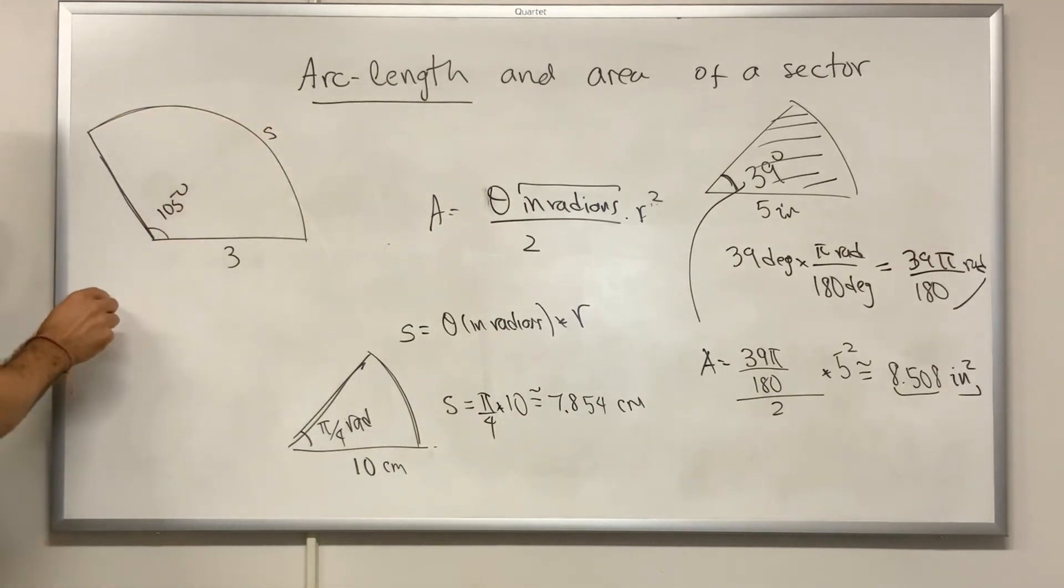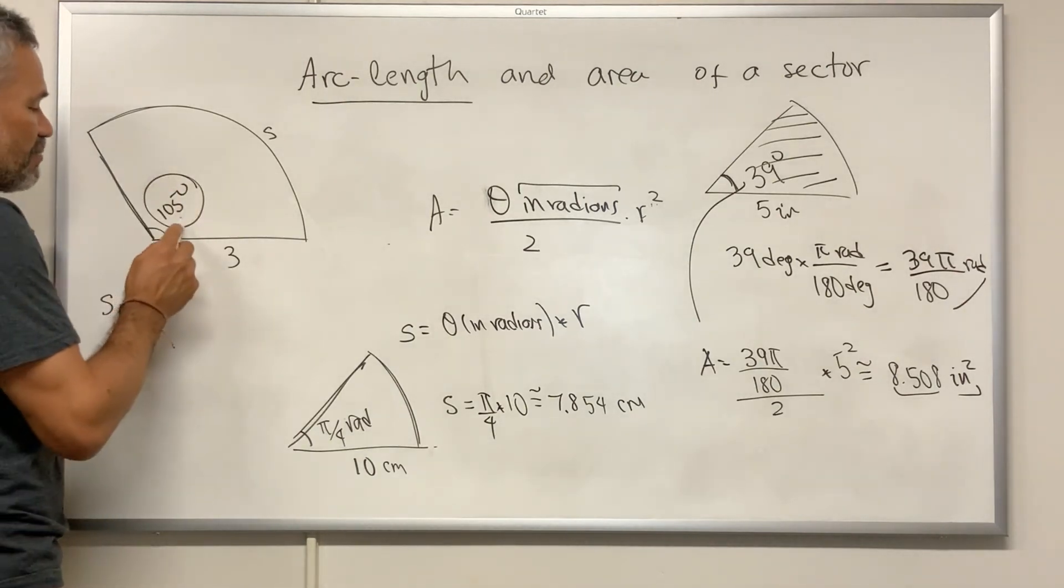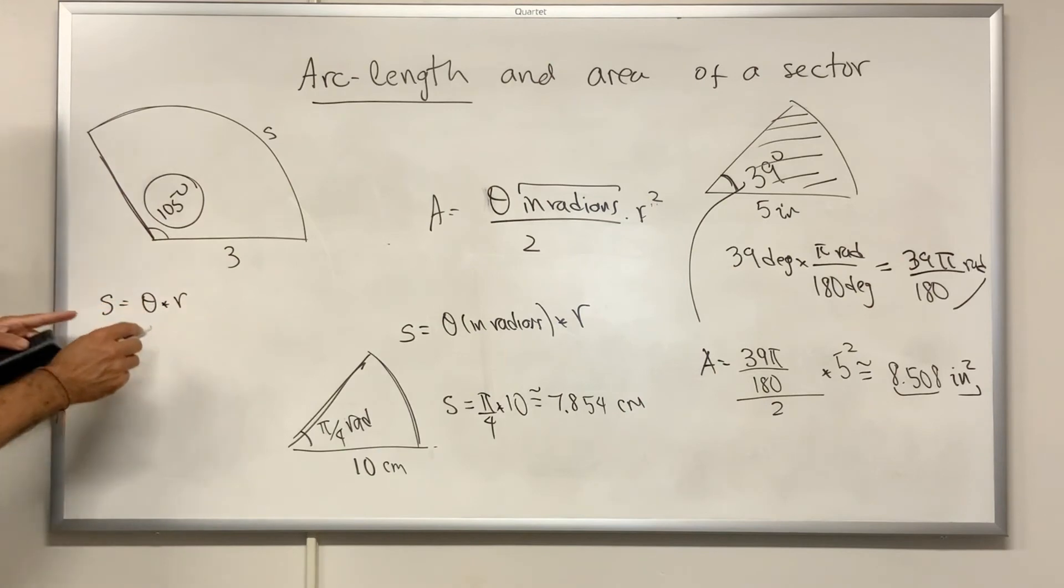then the formula is the angle times the radius. But in this case, notice that the angle is in degrees. Degrees don't have any geometrical meaning. Then we need to change it into radians.